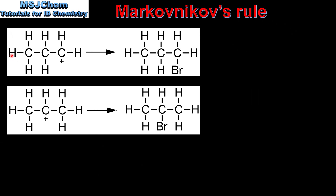Let's start by looking at the carbocation formed in each reaction. In the first reaction, which produces 1-bromopropane, we have a primary carbocation. In the second reaction, which produces 2-bromopropane, we have a secondary carbocation.